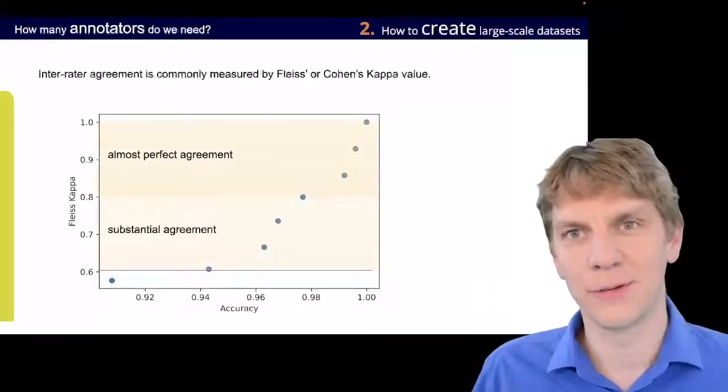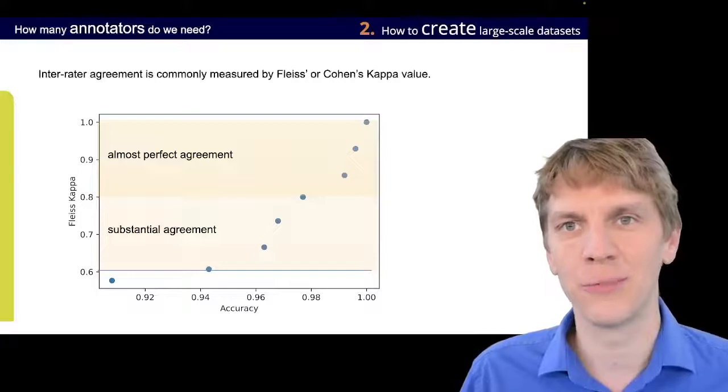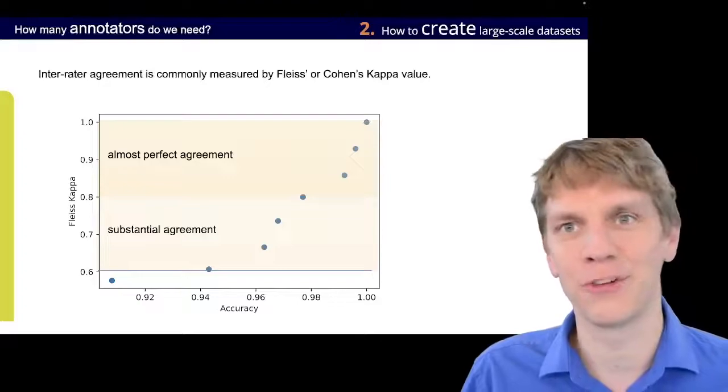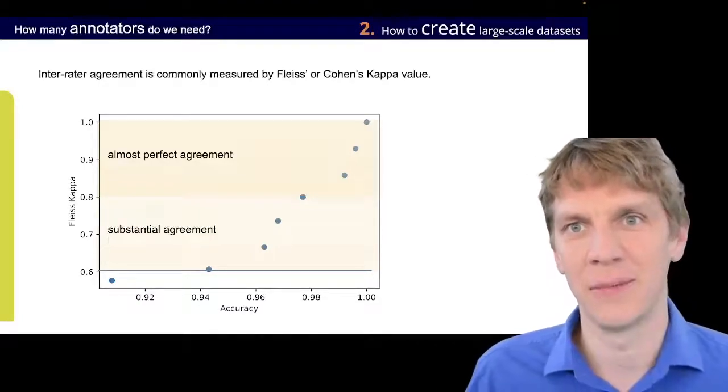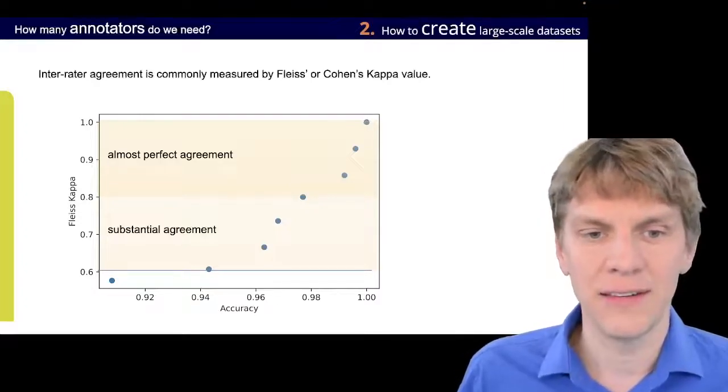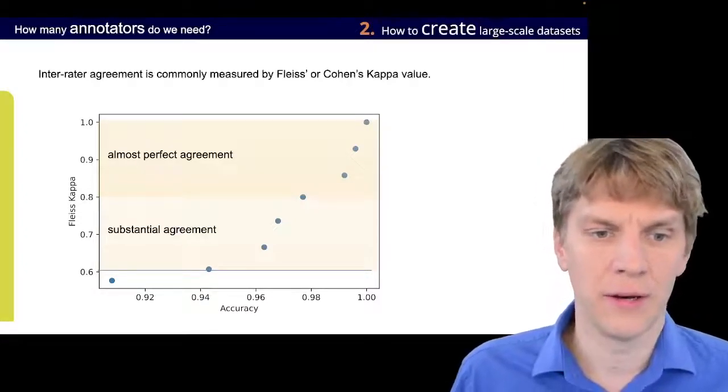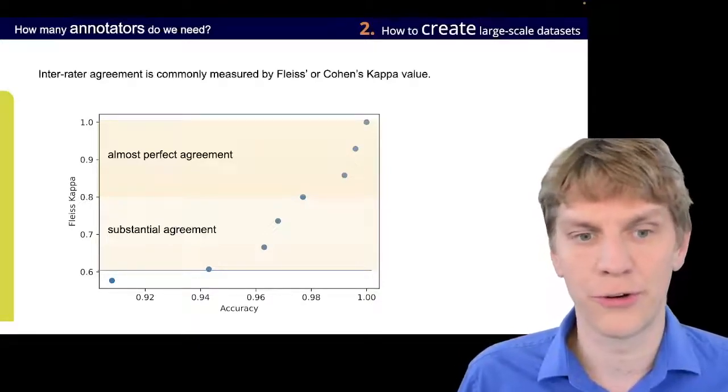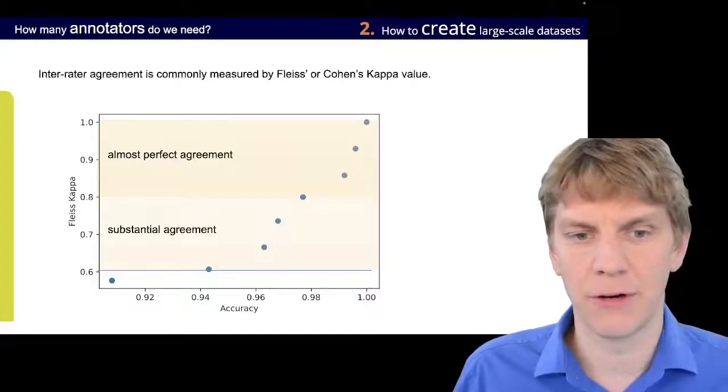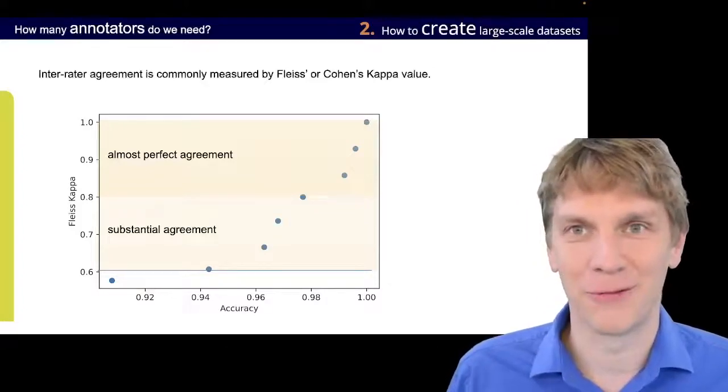As I said, it's, of course, a simulation. So, of course, we, in this case, we assumed the raters to be all independent, also independent from the case, which is, of course, a non-realistic assumption. But, if we look into that, then we can see that for a kappa value of above 0.6, which is considered or termed substantial agreement, we are at an accuracy level of 0.94. Now, or a bit above 0.94.